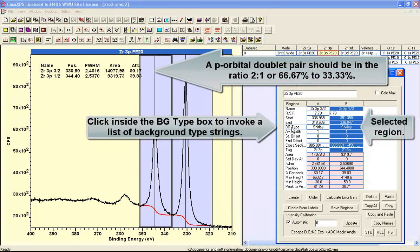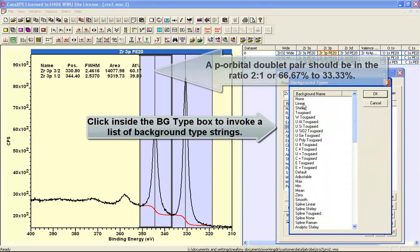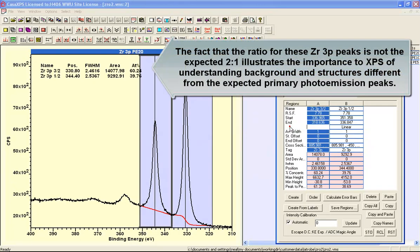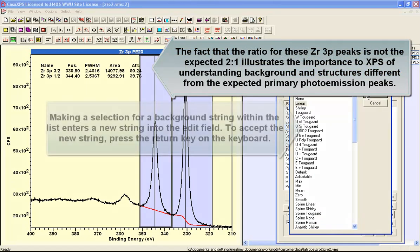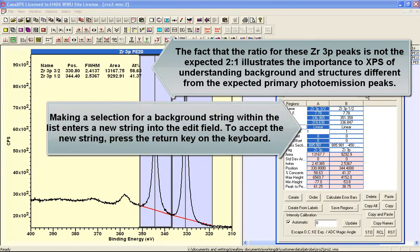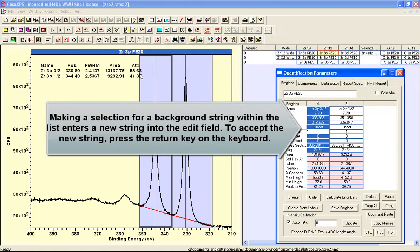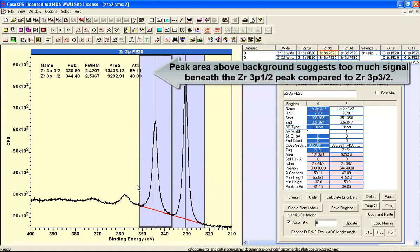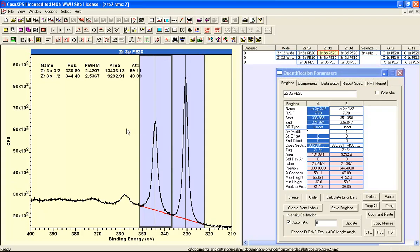Now we could try some other backgrounds, so for example we could have a linear background, and I'll do that for both of these. Once again we don't get the expected ratio. Even for a linear background, we're getting a similar answer, but nevertheless it's not the ratio that we'd expect. So what we need to do is think about this a little bit more to work out why we have the ratio that doesn't match the physics of this photoemission process.